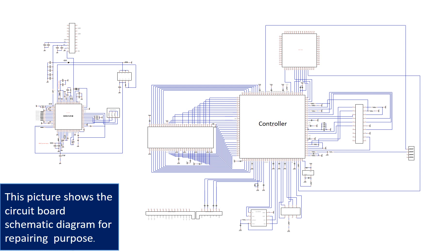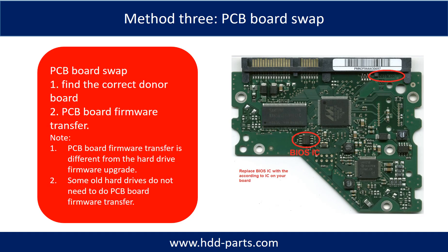This picture shows the PCB board schematic diagram for repairing purposes. Fixing hard drive PCB board method three: PCB board swap. PCB board swapping includes two steps. One, find the correct donor PCB board. Two, PCB board firmware transfer.